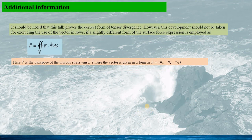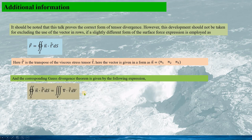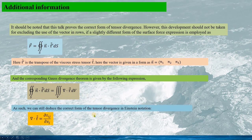However, it should be noted that this talk proves the correct form of the tensor divergence, but this should not be taken as excluding the use of vectors in row form. If a slightly different form of the surface force expression is employed — using the transpose of the viscous stress tensor TAU^T — and the corresponding form of the Gauss divergence theorem is used, we can still deduce the correct form of the tensor divergence in Einstein's notation.